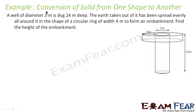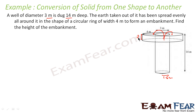This is a similar question to what we did in the previous example, but with a little difference. Here, a well of diameter 3 meters and 14 meters deep is dug — so the radius is 1.5 meters. The earth taken out is not forming a platform somewhere remotely; it is spread in the same area only, like a circular ring with a width of 4 meters. We have to find the height of this embankment.